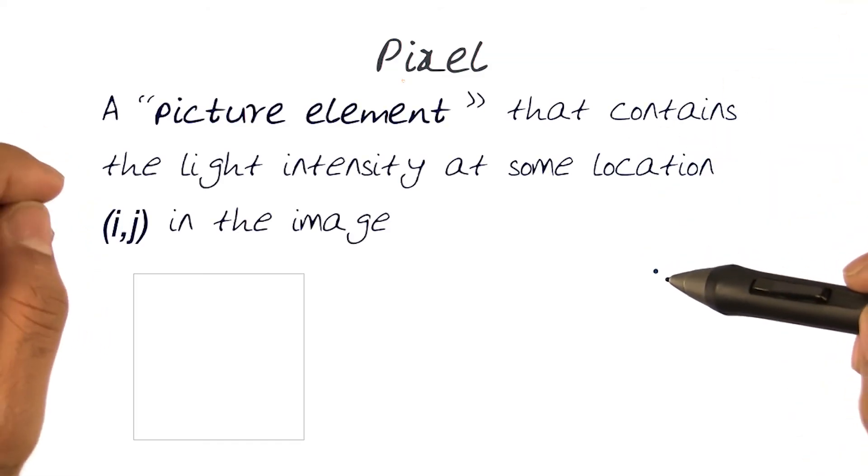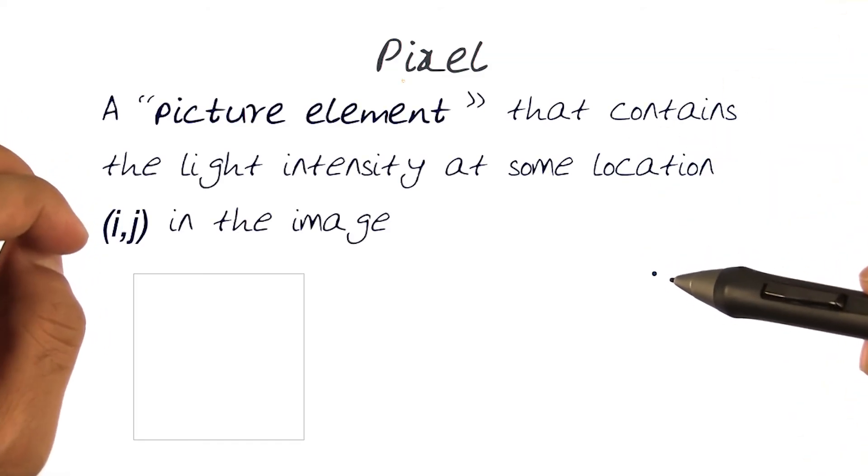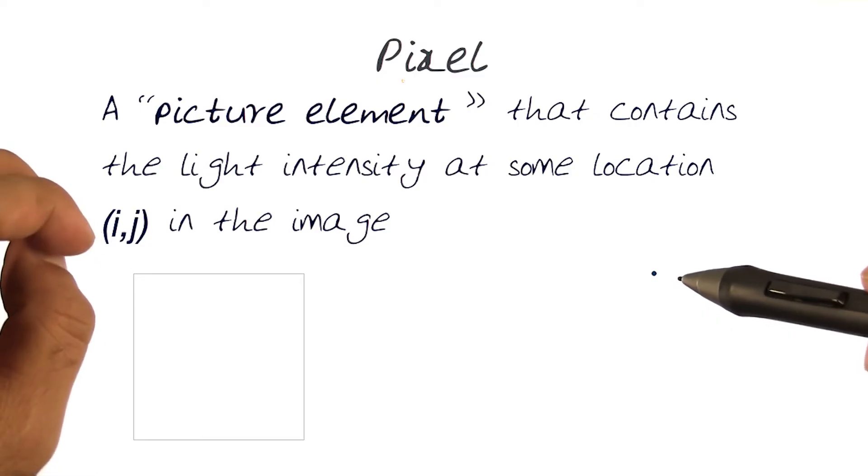A pixel, or a picture element, is basically the element that contains the light intensity at some location within that image, in this case indices i and j of that image.